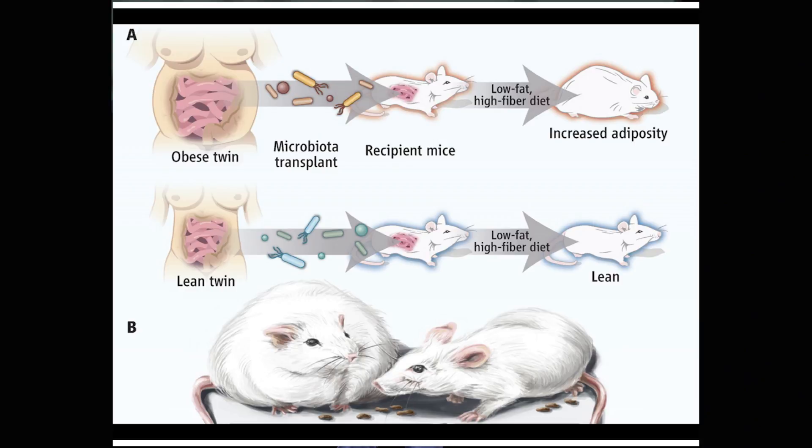What they did is get fecal samples and take out all the slaves from twins — one twin is obese, the other is lean. Then they put this microbiota inside animals, in rats and mice. What they found is that even when the mice were eating a low-fat, high-fiber diet, if they received this pool of microorganisms from the obese twin, the mice turned obese as well. But if they received the microbiota from the lean twin, they remained lean.